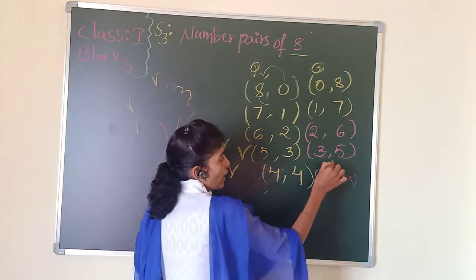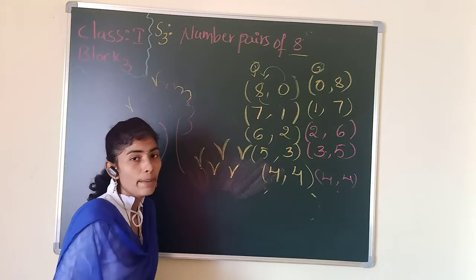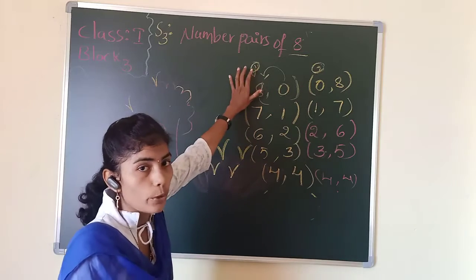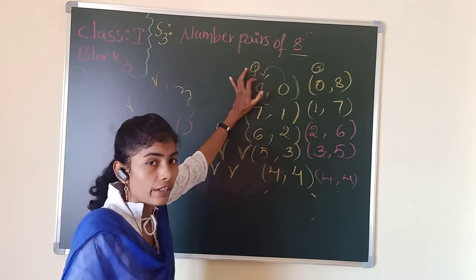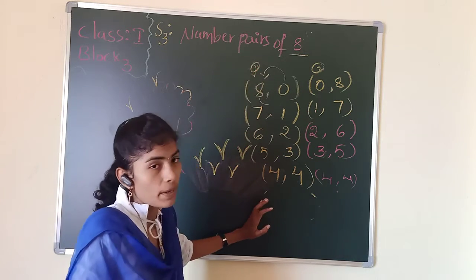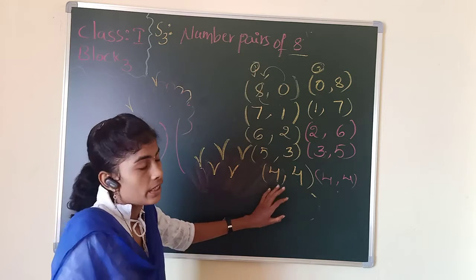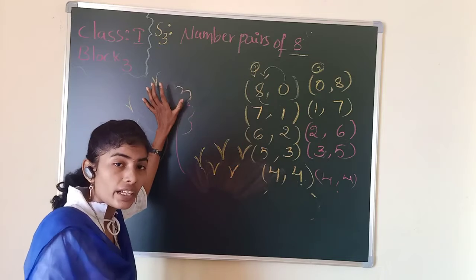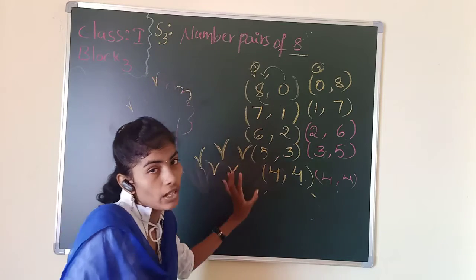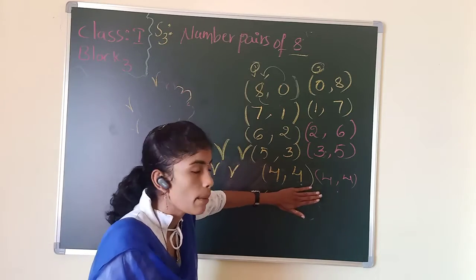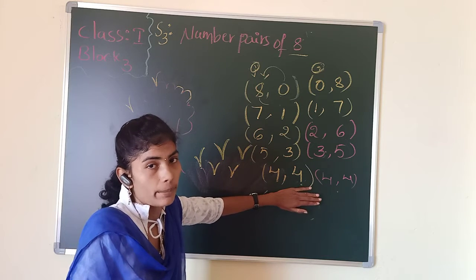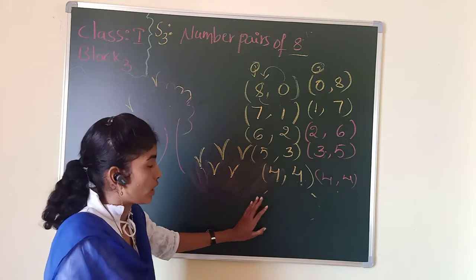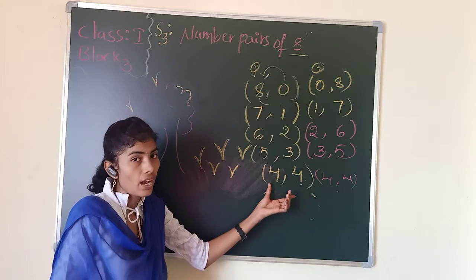How are the pairs same and how are they different, children? They have the same numbers but the position of the numbers is different. Which number pair is special in these? 4 comma 4 — because we have half of the monkeys on the tree and half of the monkeys on the grass. So 4 comma 4 is a special number pair because it contains half the number.